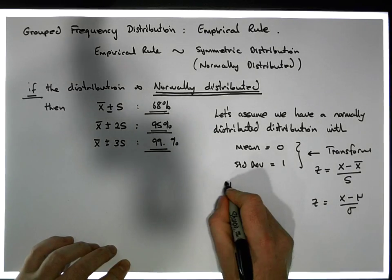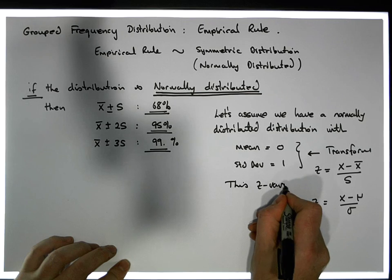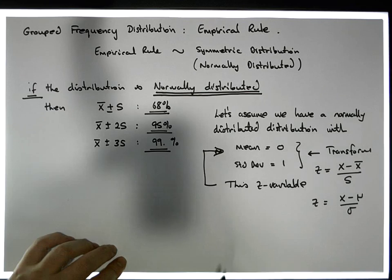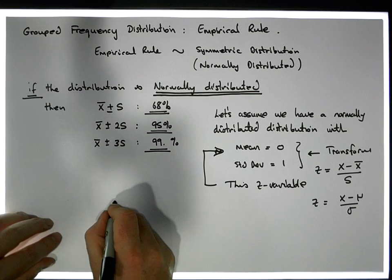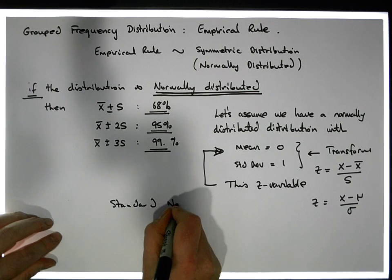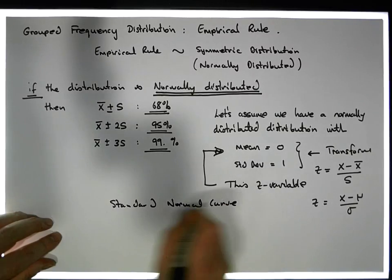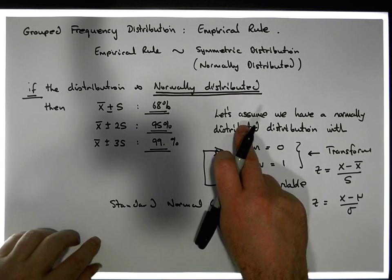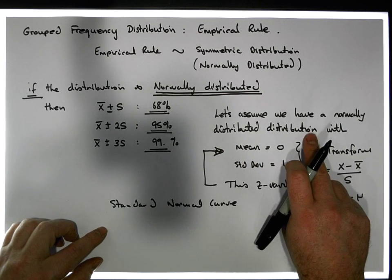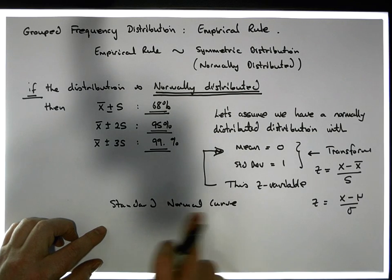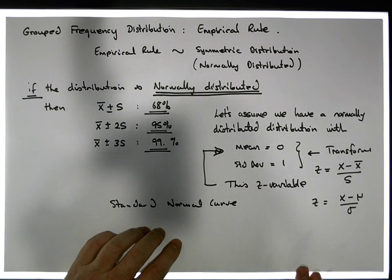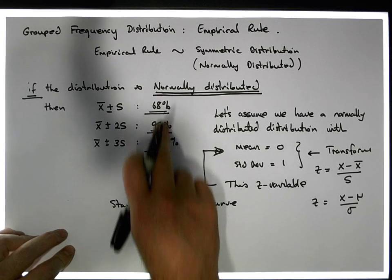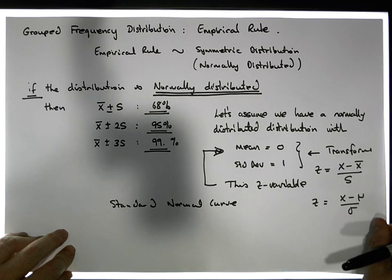This z variable has the characteristics of a mean of zero and a standard deviation of one — we call this the standard normal curve. The standard normal curve is the distribution associated with this particular z variable. So let's assume the distribution is standard normal, which we can get through the z-transformation, and ask: what percentage of observations would we expect to be within one or two standard deviations of the mean?